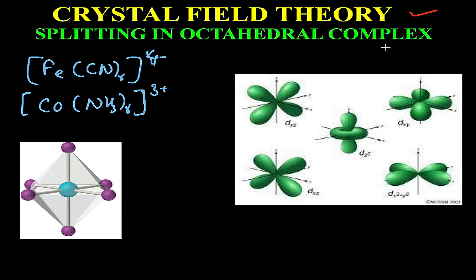Under crystal field theory, we will be looking at crystal field splitting in an octahedral complex. Generally, when talking about an octahedral complex, the central metal atom is attached to six ligands. Two examples are [Fe(CN)₆]⁴⁻ and [Co(NH₃)₆]³⁺. In this structure, four ligands are in the plane and two ligands are at the top and bottom, forming a geometrical structure with eight faces — hence called an octahedral complex.